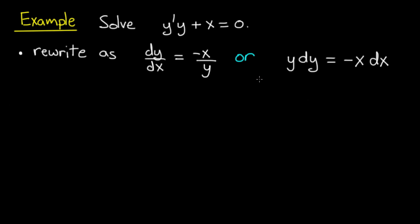Now we apply that trick for remembering what to do, and that is we put the dx on the side with the x and we put the y on the side with the dy. So we multiply through by dx and multiply through by y. That's the trick to remember.